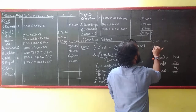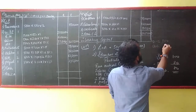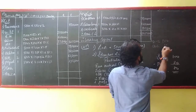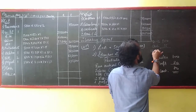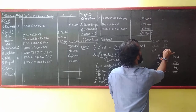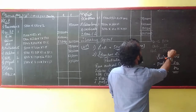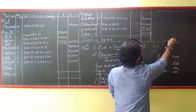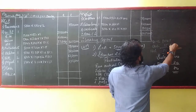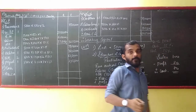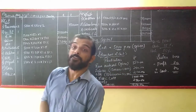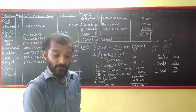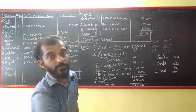Cash requirement is 15% of net working capital. So cash is 15%, meaning the balance working capital is 85%. In other words, 100% minus 15% cash equals 85% of other working capital.